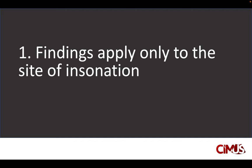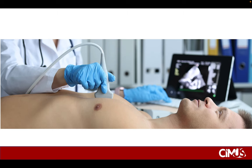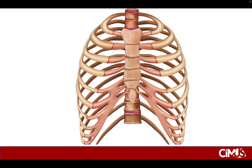Principle number one: the findings we're going to be talking about today apply only to the site of insonation — that is where your transducer is on the patient's chest. In a supine patient, air is most likely to be located in the least gravitationally dependent area, highlighted in blue. This doesn't apply to loculated, localized, or septated pneumothoraces.